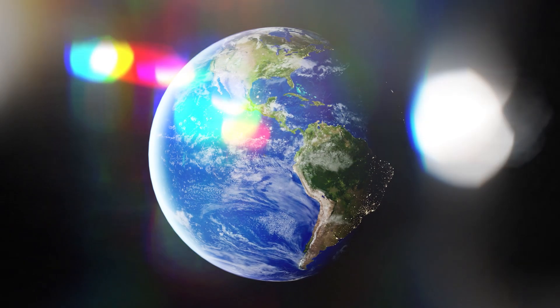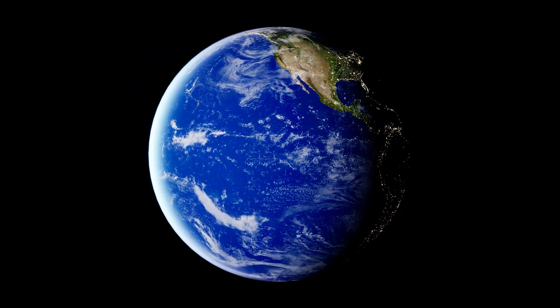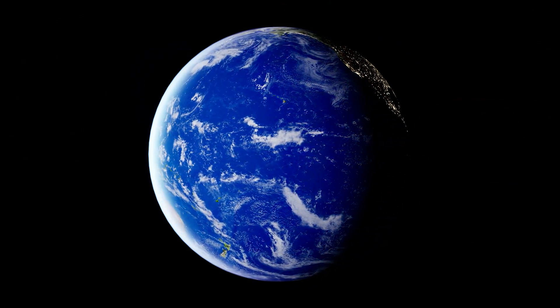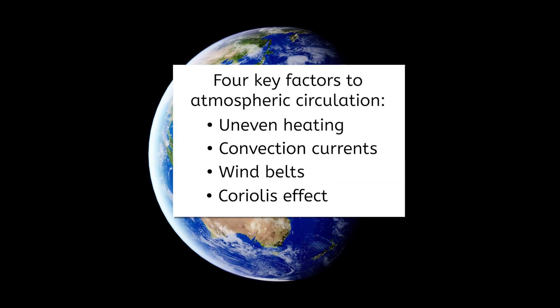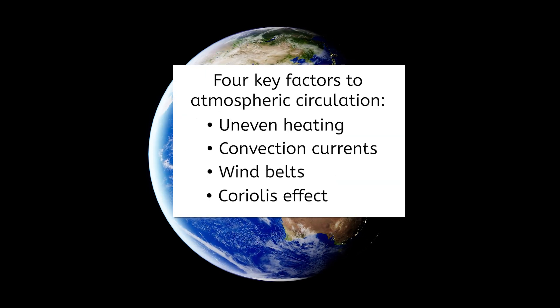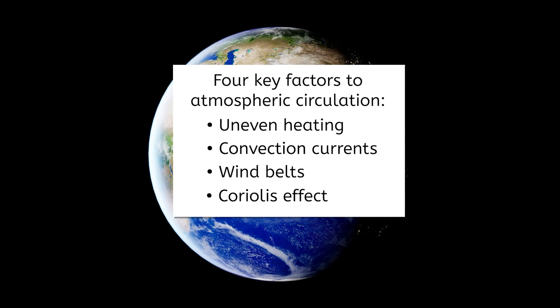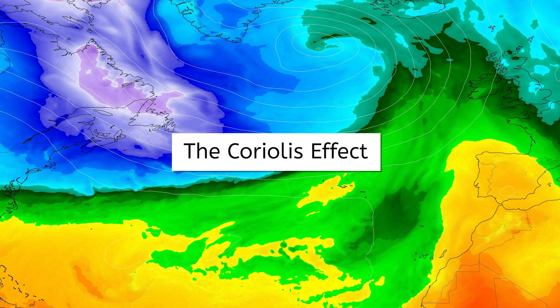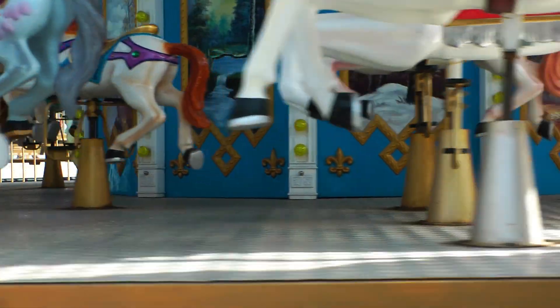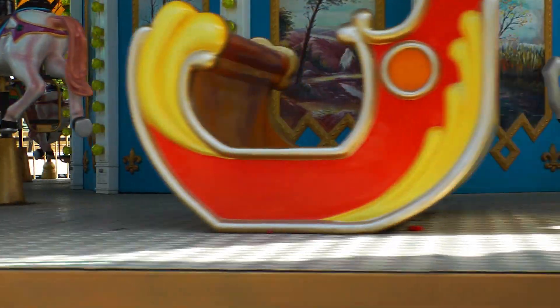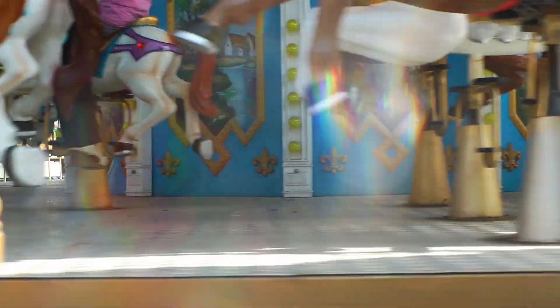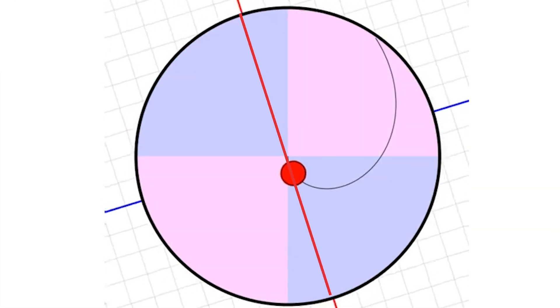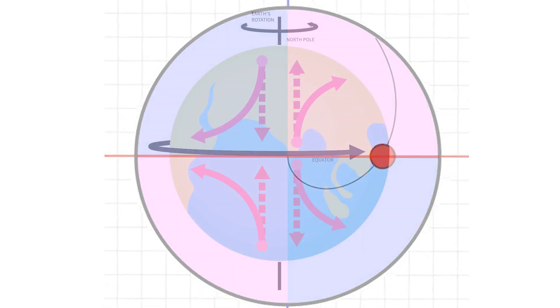But the Earth is spinning as these cells move wind, which impacts the direction of the wind. This brings us to the fourth factor. It's called the Coriolis effect, and it has a huge impact on weather. Imagine you're standing at the center of a rotating carousel and trying to roll a ball straight across. What would happen? As the carousel spun, the ball would appear to curve from your perspective on the ride.